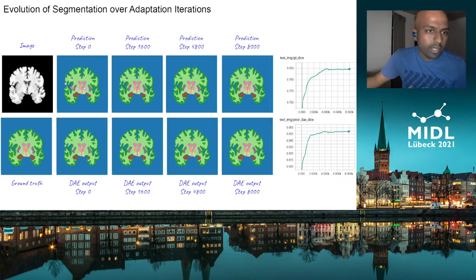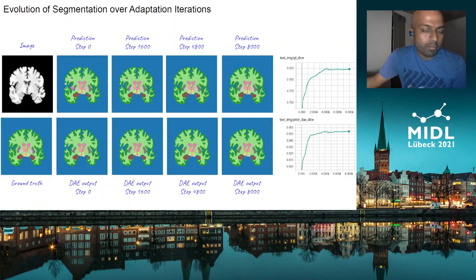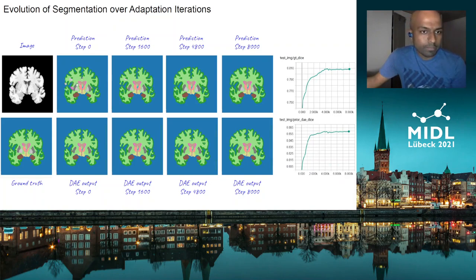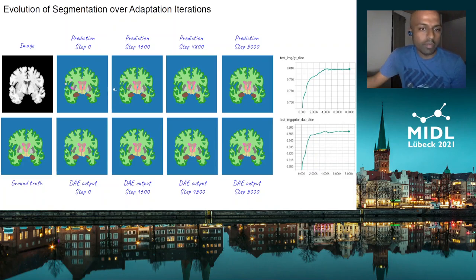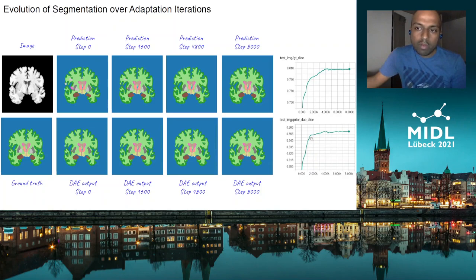Qualitatively, given a target domain image, when passed through a network trained on a different source domain, the network makes some mistakes. You pass this noisy segmentation through the denoising autoencoder to obtain a denoised version, then adapt the normalization module parameters by minimizing the loss between the two segmentations. After a number of iterations, the segmentation improves and the mistakes reduce. Repeating this procedure, the Dice score with respect to ground truth — which we don't have access to — follows quite nicely the pseudo-loss: the Dice between the input and output of the DAE.